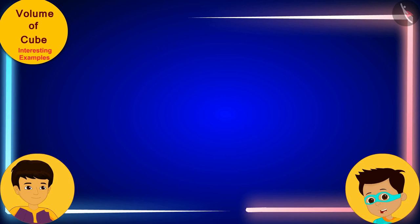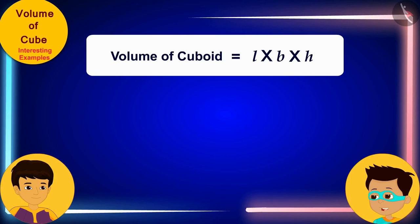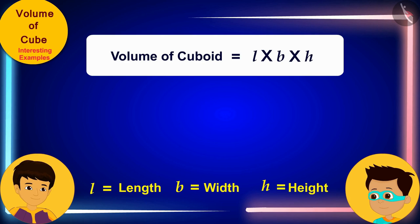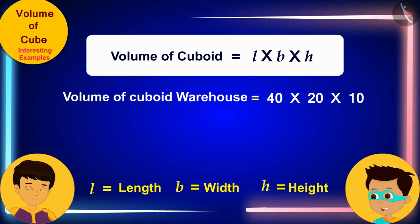This is the formula for the volume of the cuboid, where L, B and H are the length, width and height of the cuboid respectively. Let me write down the length, width and height of this cuboid warehouse and quickly find its volume. Look Manas! The volume of the warehouse is 8000 cubic meters.